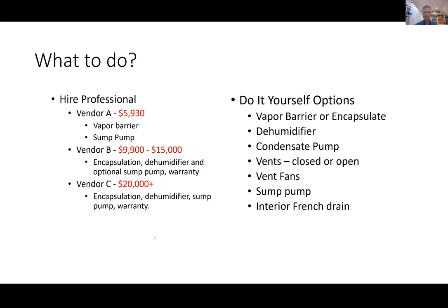I thought, there's got to be a better way, so I started putting together my checklist. Vapor barrier — do I just do a vapor barrier around the edges like I have now and replace what's old and falling apart? Or do I cover the entire crawl space floor without encapsulating? Or do I go full encapsulation — sealing everything, taking the vapor barrier up the sides of the walls? I knew there was a good chance I needed a dehumidifier, and with a dehumidifier you're going to need a condensate pump to move the water outside the house.